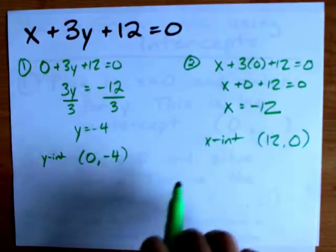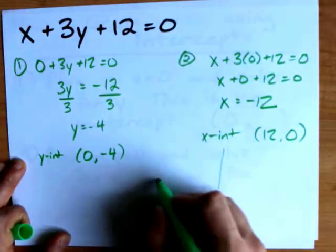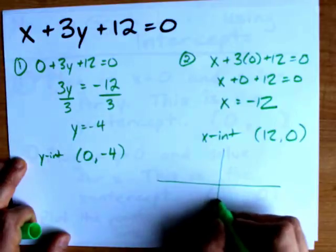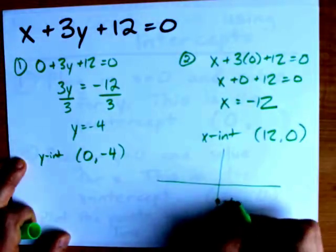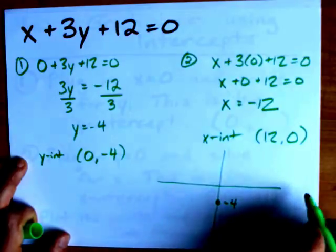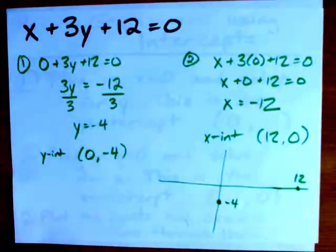To graph this, if I had a grid, I would definitely use it. But here's my makeshift grid. My y-intercept is somewhere down here at (0, -4). My x-intercept is somewhere in the positive x-zone. Let's put it here.